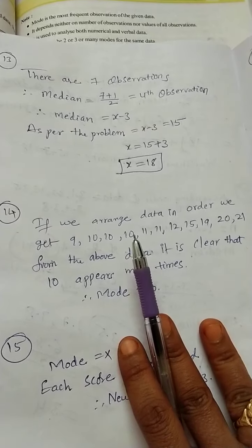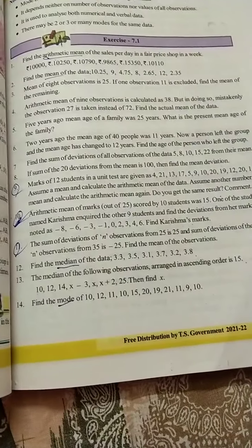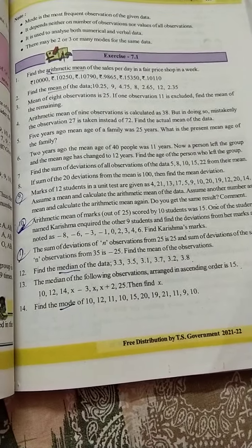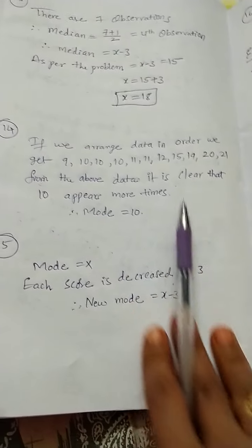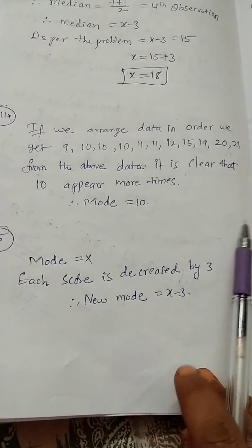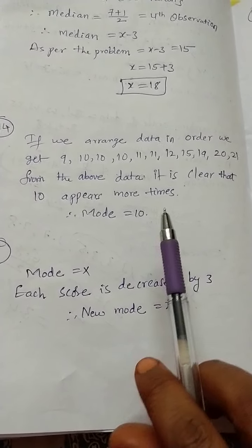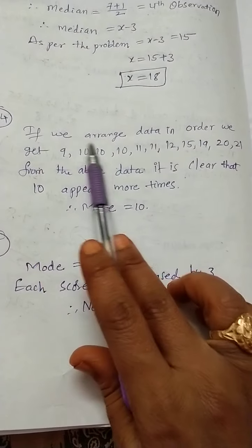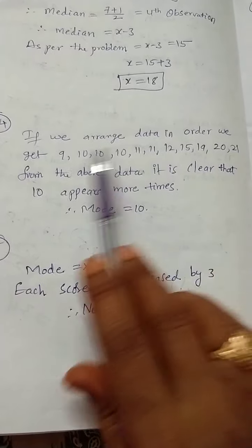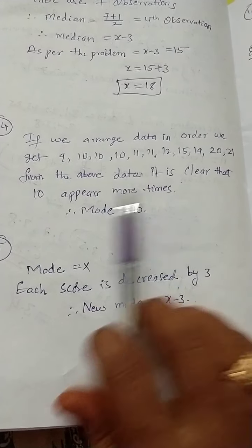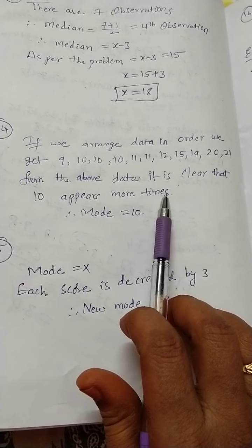Next, Question 14: Find the mode of the given data. Let me revise the definition of mode. Mode is the most repeating value in the given data. If we arrange the data in order, from the above data it is clear that 10 appears more times, so mode is 10.